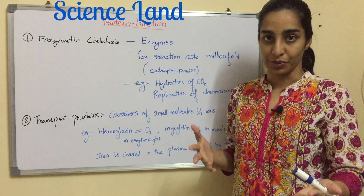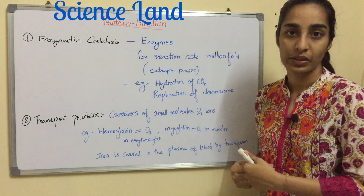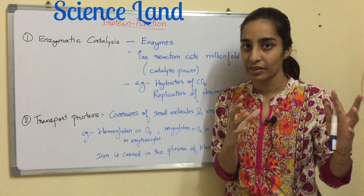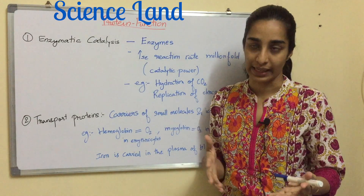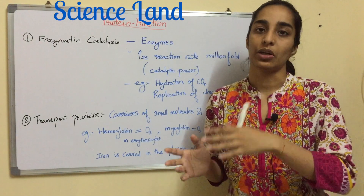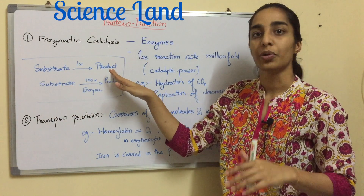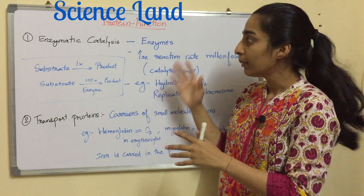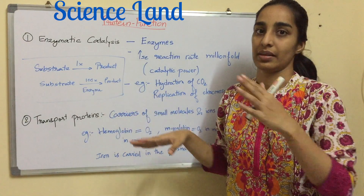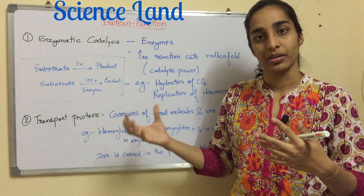Let's begin. There are a couple of functions — I'll be discussing each function and giving you examples. The very first function is enzymatic catalysis. Certain proteins are very specific in nature and behave as enzymes. Enzymes increase the reaction rate of a particular reaction. For example, a substrate converting into product at 1x speed will, in the presence of an enzyme, convert at 100x speed. So the enzyme accelerates the reaction such that the product is made quickly.